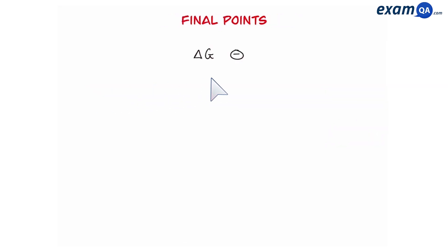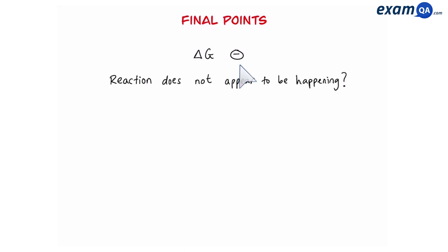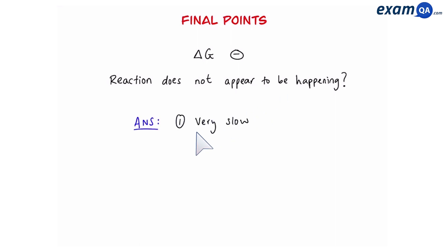Some final points. If a reaction has a negative value for delta G but does not appear to be happening, there are two reasons. Number one, maybe it is happening but very, very slowly. Or the second reason could be that the reaction has very high activation energy.